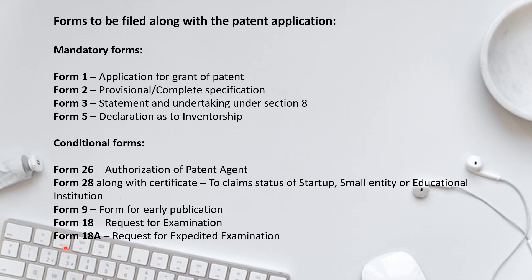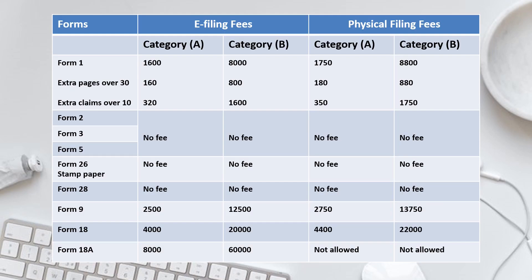Now let's see the fee structure — this is the main part of the session. There are two types of filing: e-filing and physical filing, and there is a slight difference in fees between them. Physical filing is around 10% higher than e-filing fees, because the patent office prefers that you file online. The fees are also divided as per Category A and Category B.